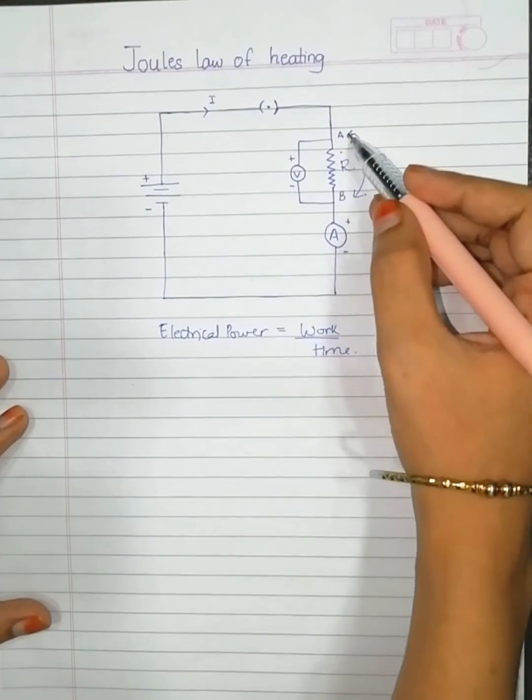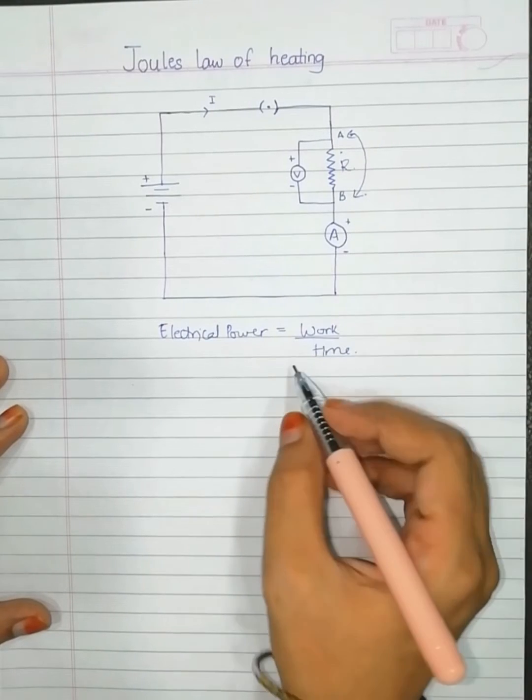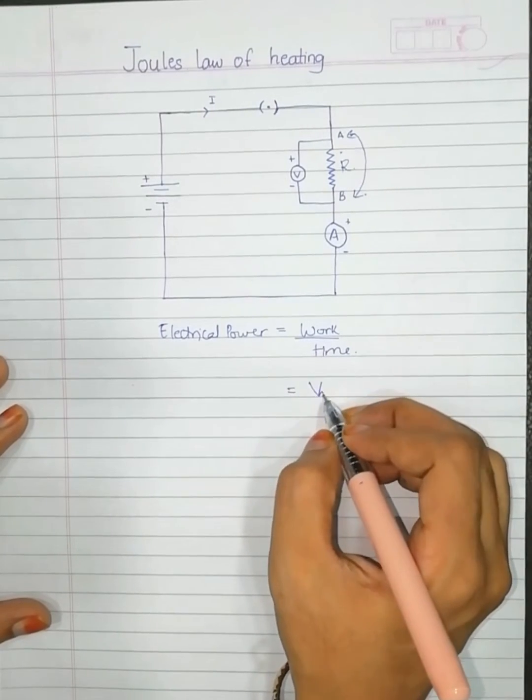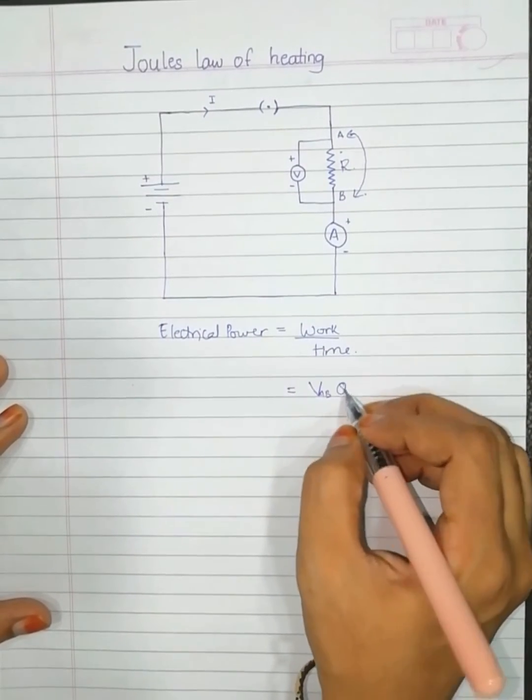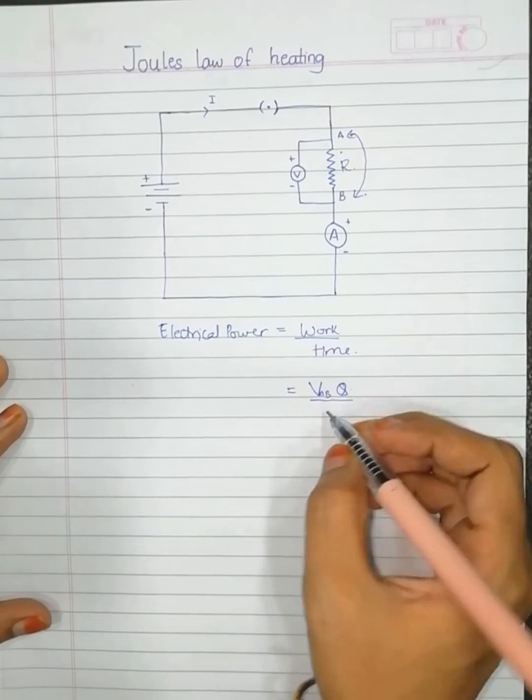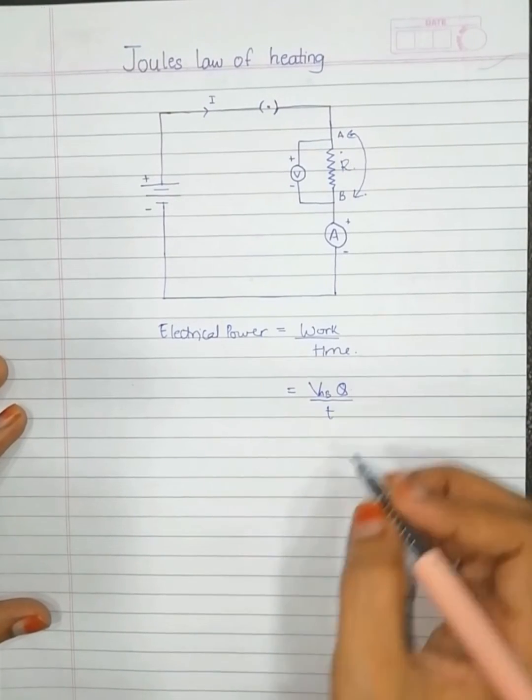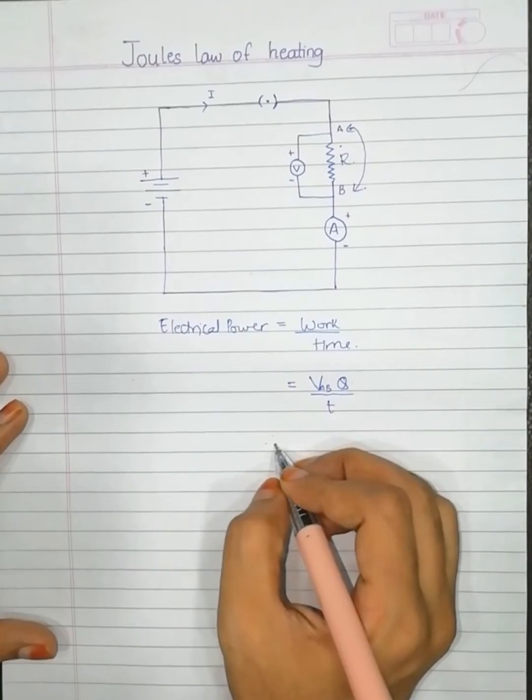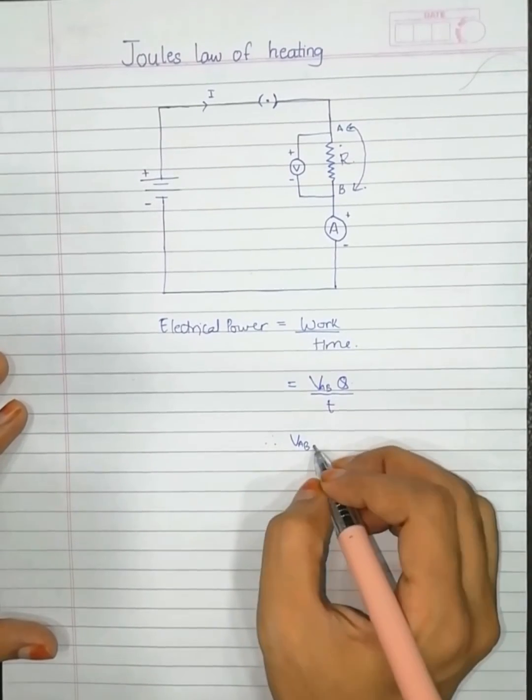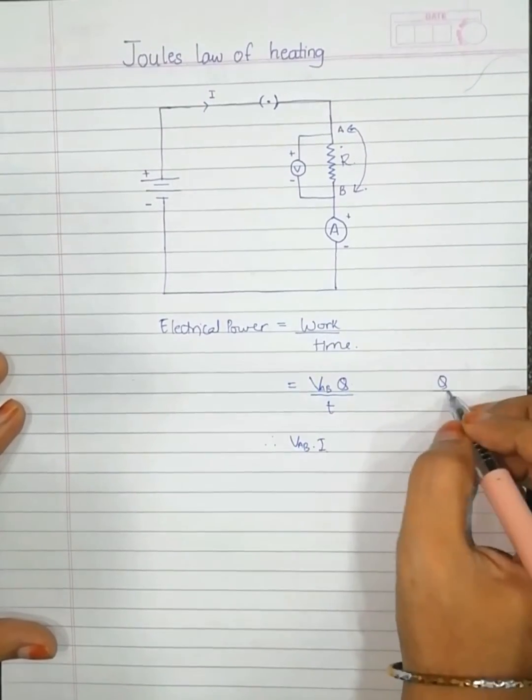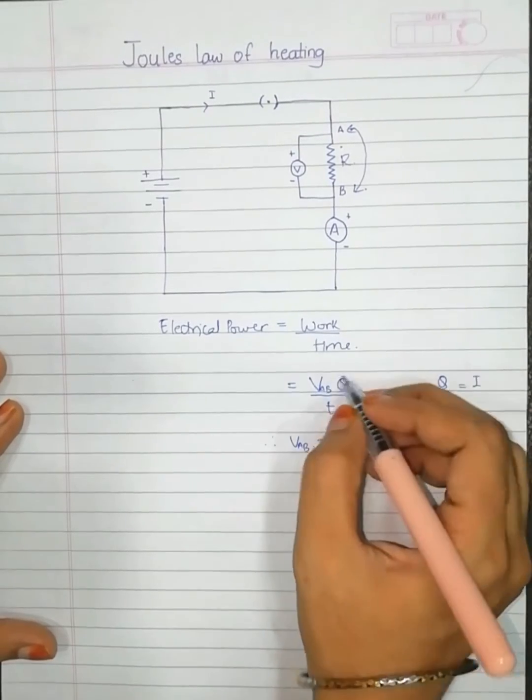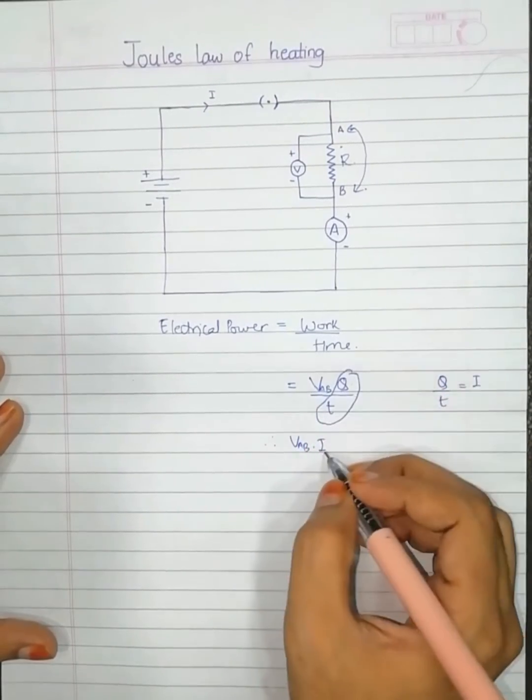The work done while going from A to B can be given as V with the subscript AB times Q. Q is the charge, so power equals V_AB times Q upon the time required T, so we can write V_AB into I because we know Q upon T equals I.